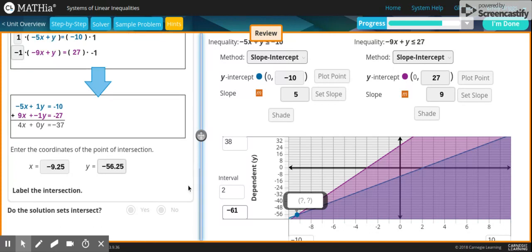Enter the x-coordinates of the intersection. In this case, it's negative 9.25 because you divide negative 37 divided by 4. For this one, you use the solver to get your answer. Then you just enter in your coordinates.